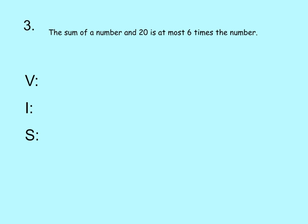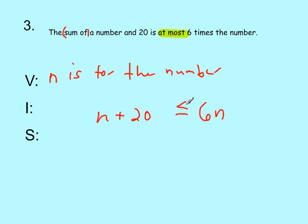And number 3. The sum of a number and 20 is at most 6 times the number. So our variable assignment, since we don't have a question here, we know we are going to solve N is for the number. And then we find our inequality phrase, at most, right there. And then it says at most 6 times the number. At most again, less than or equal to 6N. And it says the sum of a number. Sum of means a group of addition. So a number plus 20 is less than or equal to 6N.